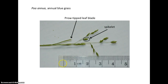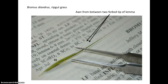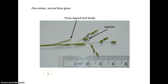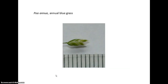Here's annual bluegrass, Poa annua. One way of recognizing this grass has to do with the leaves. If you look at the leaf, it kind of looks like an upside-down canoe — that's called a prow-tipped leaf blade, like the curved-over front of a boat. That's useful for recognizing the genus Poa. The spikelets are quite small, as you can see with the millimeter ruler.